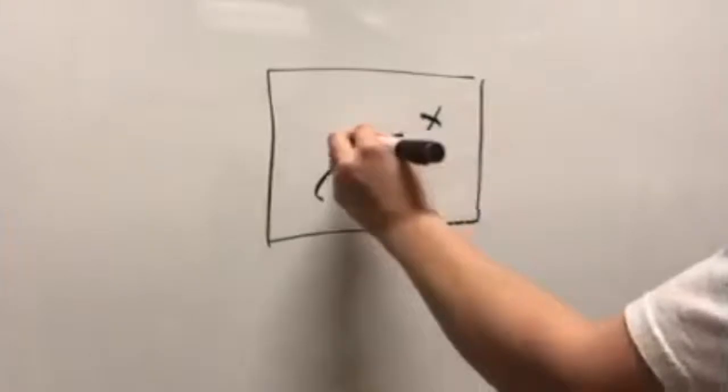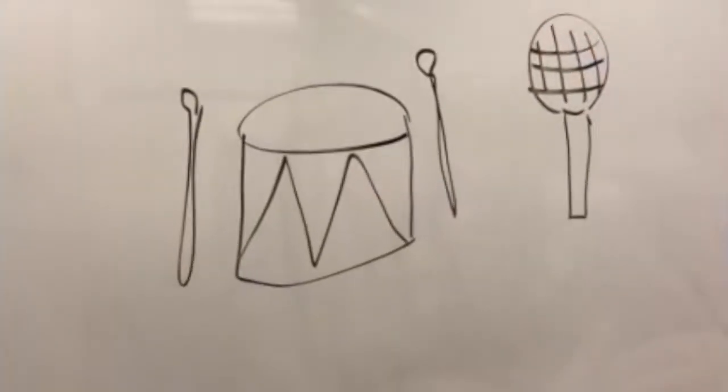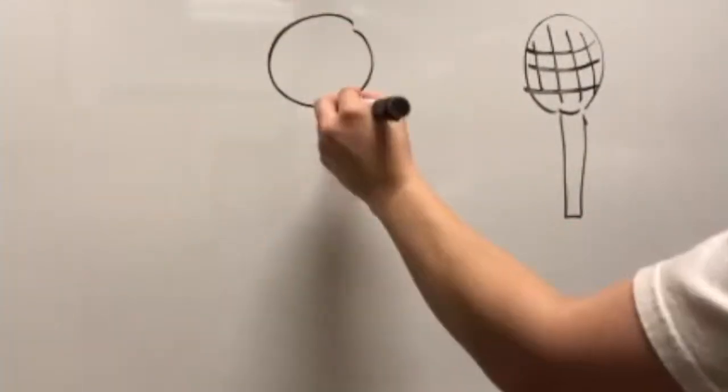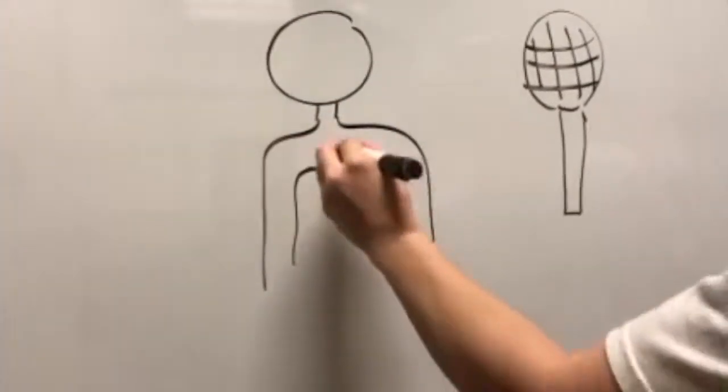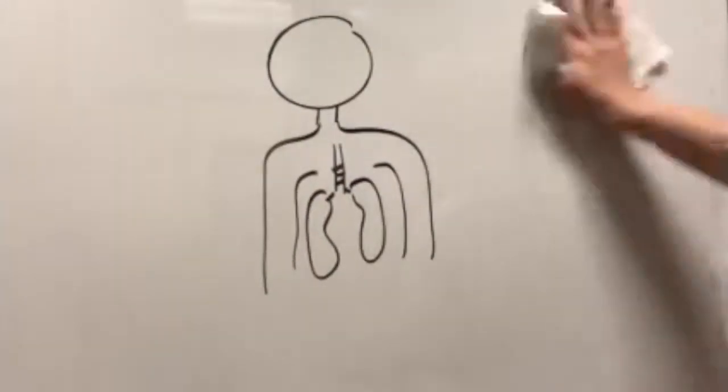Another method is auditory motor mapping training. This method uses percussion instruments and singing to improve speech and verbal output. Singing helps children learn how to control air release and textual phrasing, allowing for better respiratory muscle development to help fluidity.